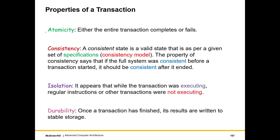Atomicity: in the context of transactions, it basically means that either the entire transaction completes or fails. Failing a transaction means abort — the rest of the world either perceives that the set of instructions has executed completely or has not started at all. We can say the entire transaction appears to complete at some instant of time instantaneously, or it appears to have not started at all.